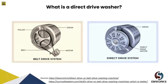By contrast, a direct drive washing machine contains circuit boards and other complex parts that make self-repairs virtually impossible. This means in the event that the machine does break down — which is technically not very likely — you are looking at a higher bill to call a washing machine technician to come and fix it.